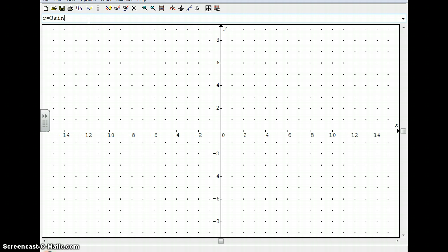But in Graphmatica they use parenthesis T. So instead of theta, the Greek letter theta, it's just the letter T. Make sure you put parenthesis right there. When you hit enter, there it is. 3 sine theta.